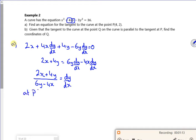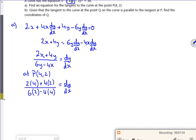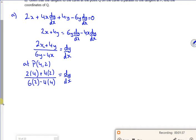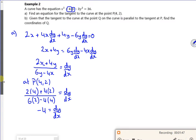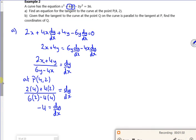Well I want to find it at the point P which is 4 comma 2. So x is 4, y is 2. So what have I got? 16 on the top, minus 4 on the bottom, it's going to give me minus 4 as an answer. There we go. And that's the gradient of my tangent at the point 4, 2.